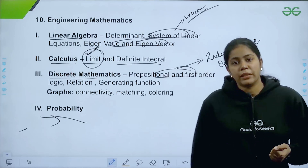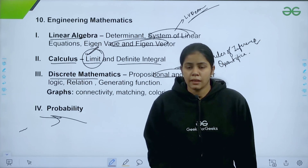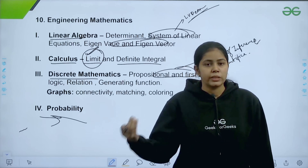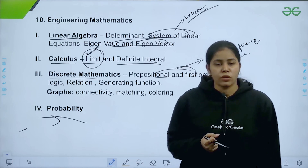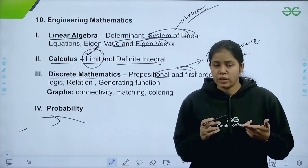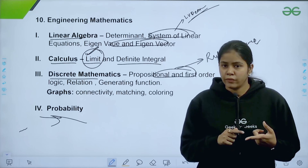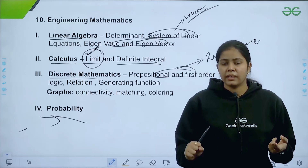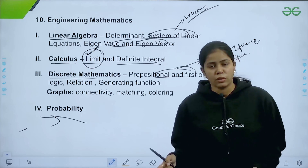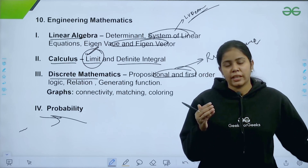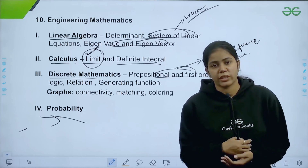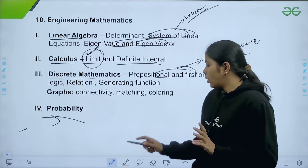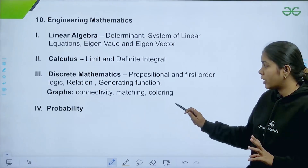For probability, questions can be asked from any distribution. You have studied probability in 12th standard and graduation, so you can easily solve these questions. They may ask about random variables following a distribution, dice problems, or Bayes' theorem. Go through all the topics once and you'll be able to answer, as at least one or two questions will be asked from probability in the exam.